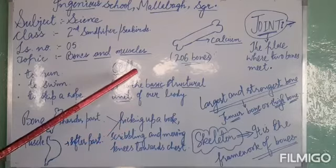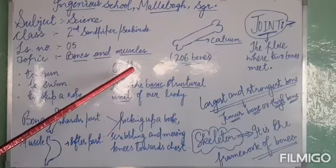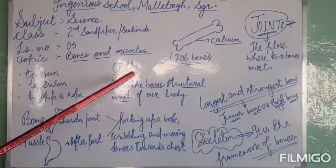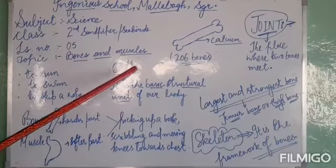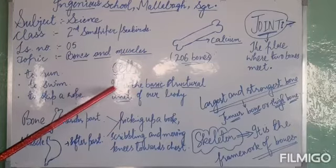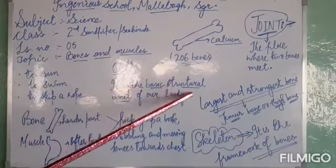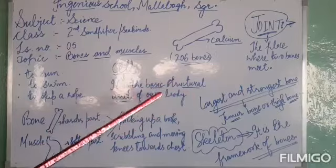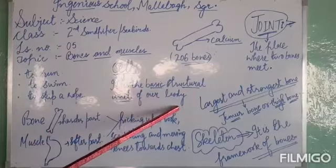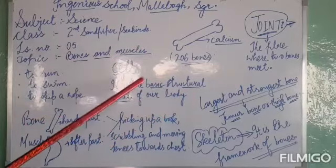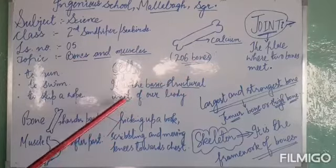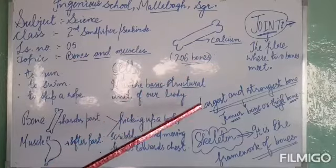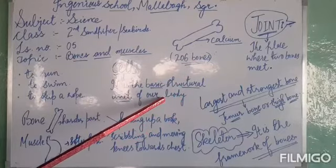Our body is made up of different kinds of cells which differ in shape and size. What is a cell? A cell is the basic structural unit of our body.